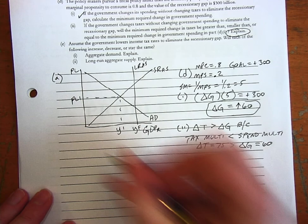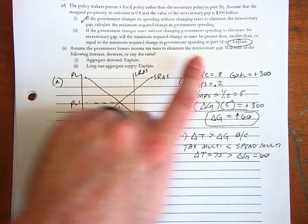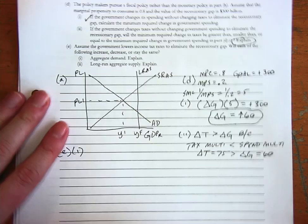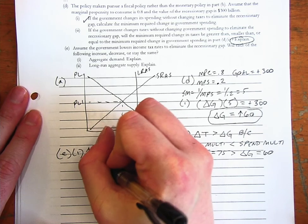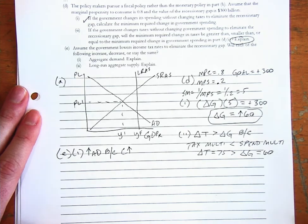Let's take a look at part E. So we'll do that one over here. E1 says assume the government cuts income tax rates. Each of the following increase, decrease, stay the same. Aggregate demand explained. So if they cut income taxes, that will increase aggregate demand because consumption goes up, because people will spend more. Simple. Good.